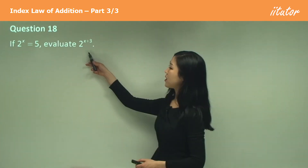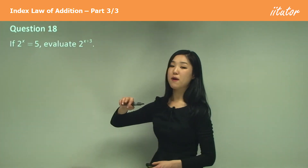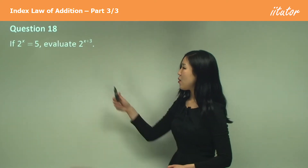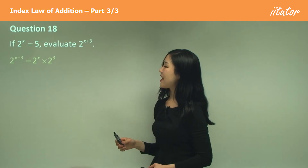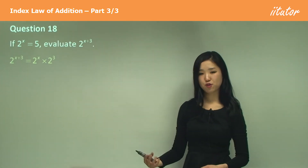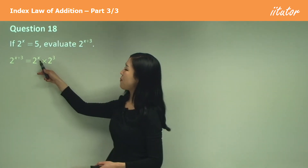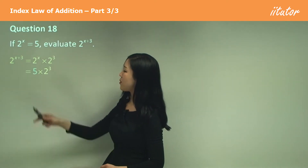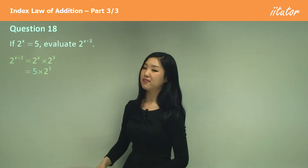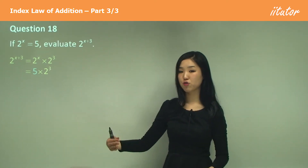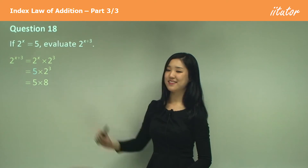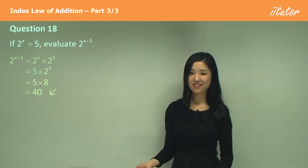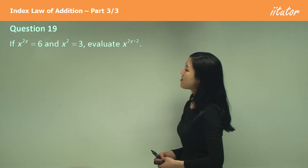Again, we're given 2 to the power of x is 5, and we need to evaluate 2 to the power of x plus 3. We can split up the indices: it becomes 2 to the power of x times 2 to the power of 3. We know 2 to the power of x is 5, so replace it with 5. Now 2 cubed is 2 times 2 times 2, which is 8. So 5 times 8 is 40. That's the answer.